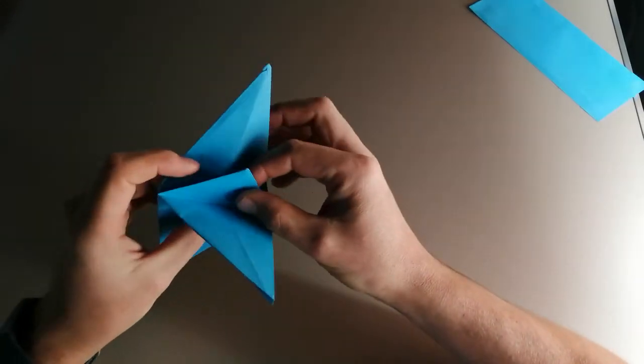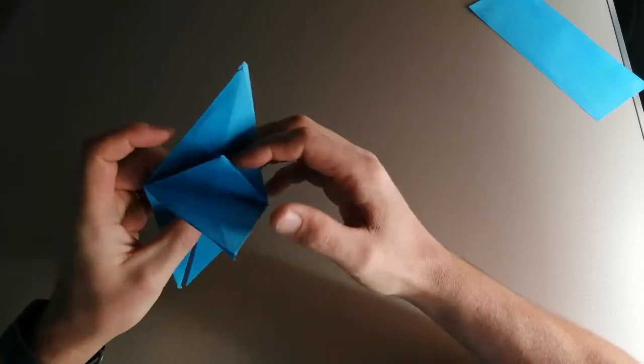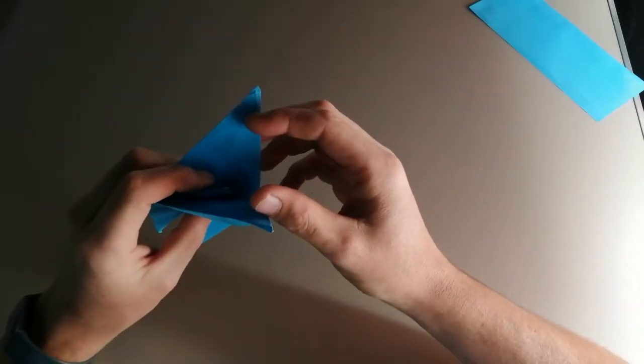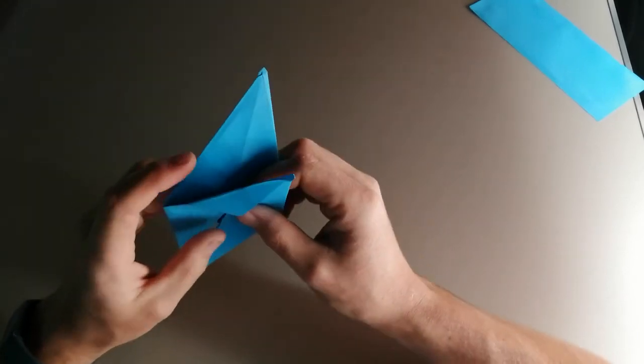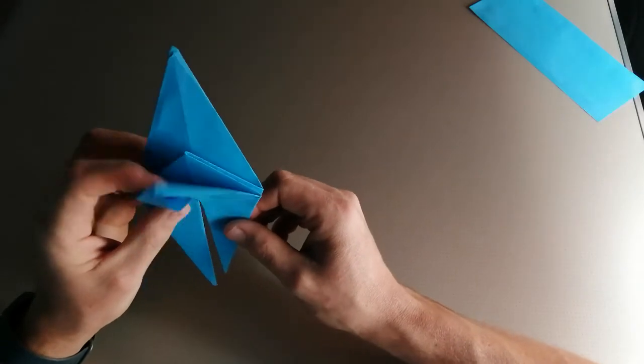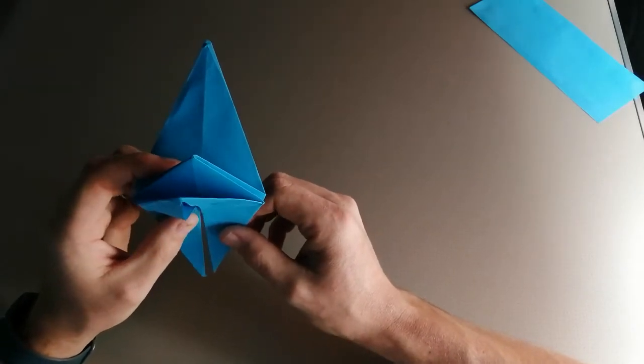You can see here we've got the small triangle facing upwards and we've got these two large triangles facing upwards. These are going to be the wings of our bird. And then this section and this section are going to be our head and tail.